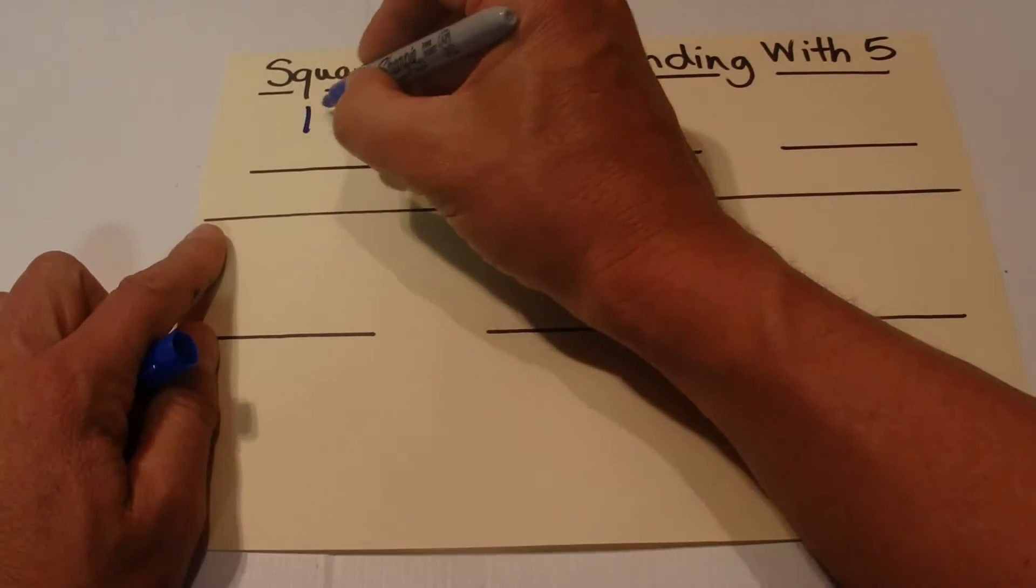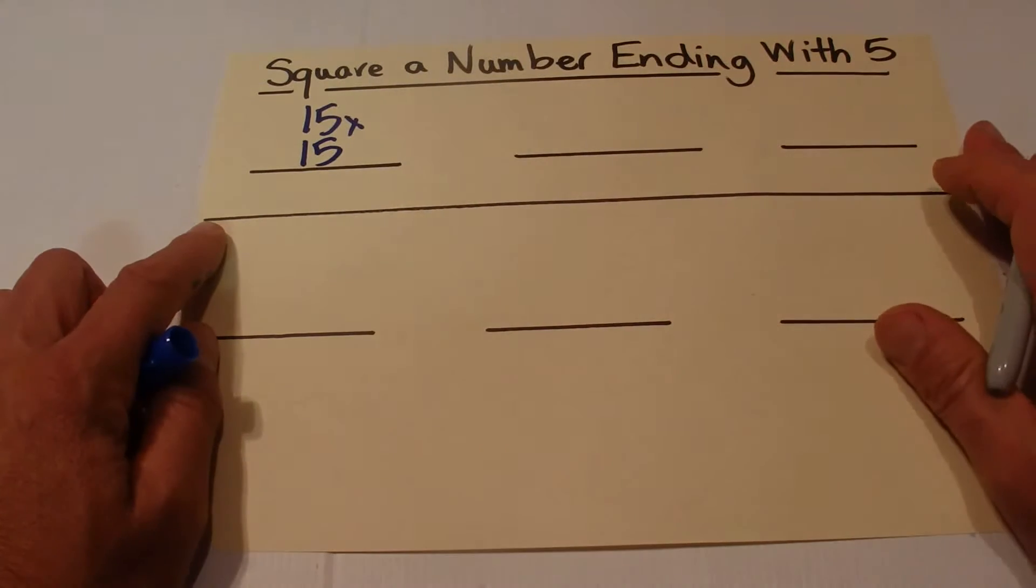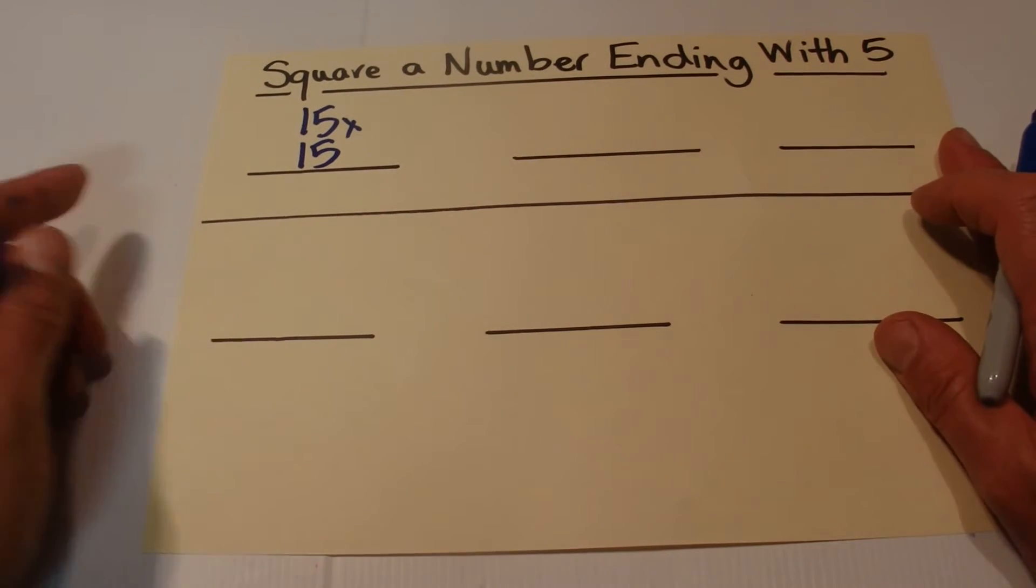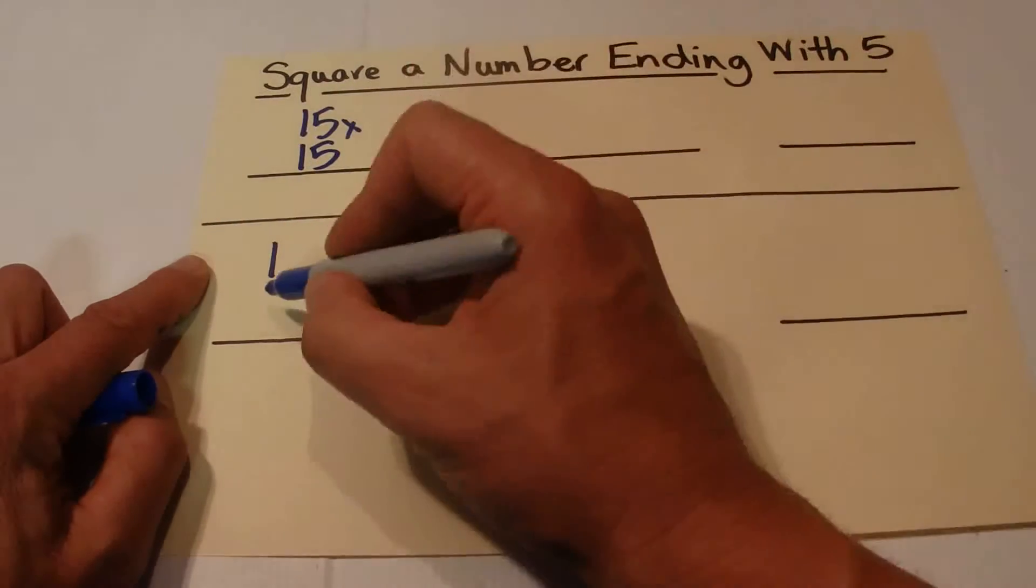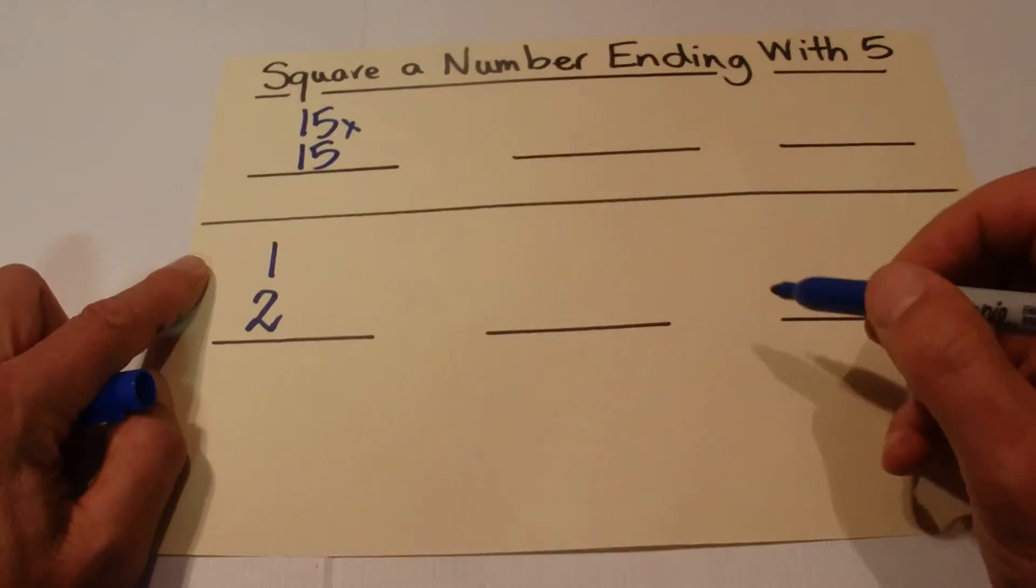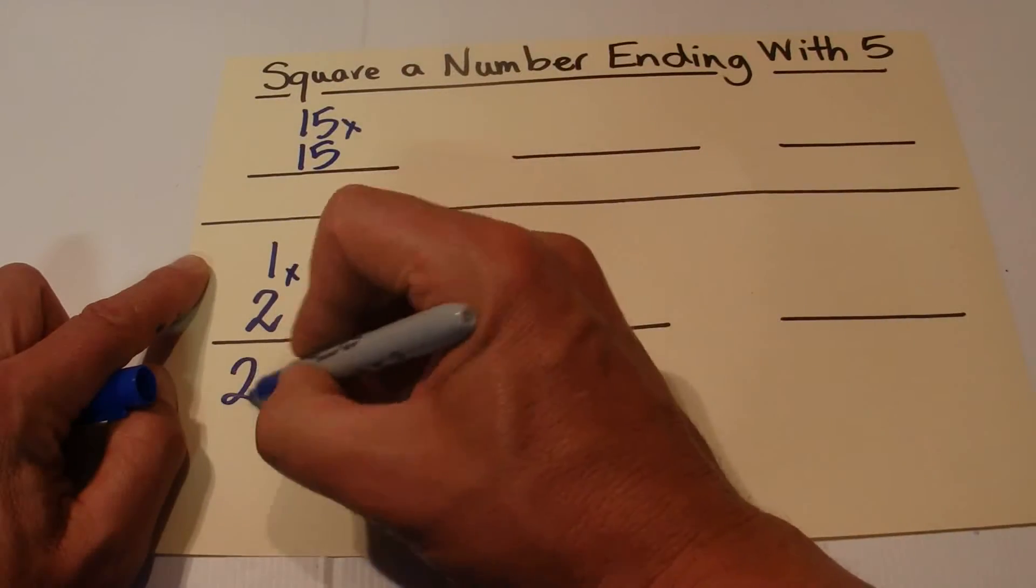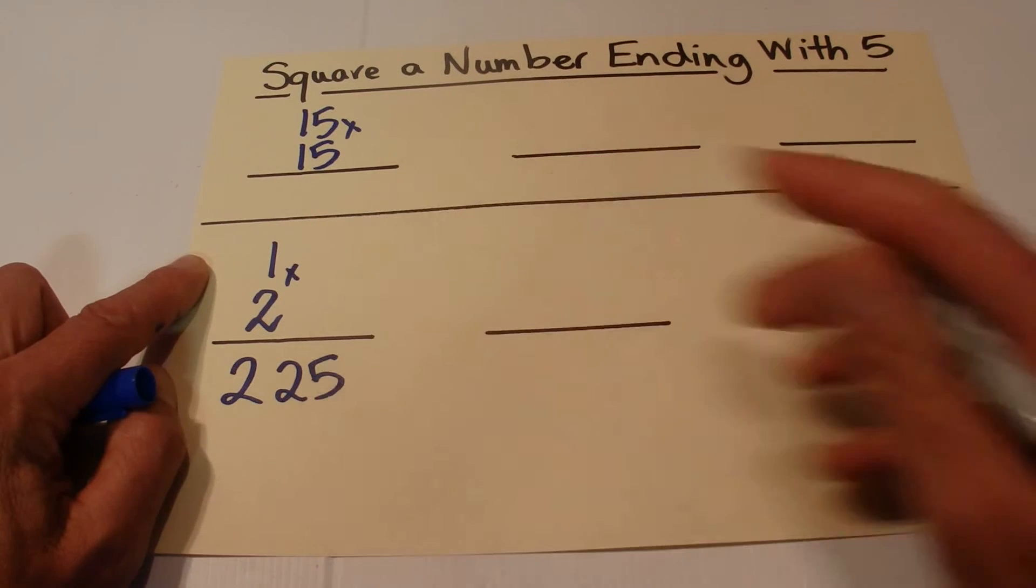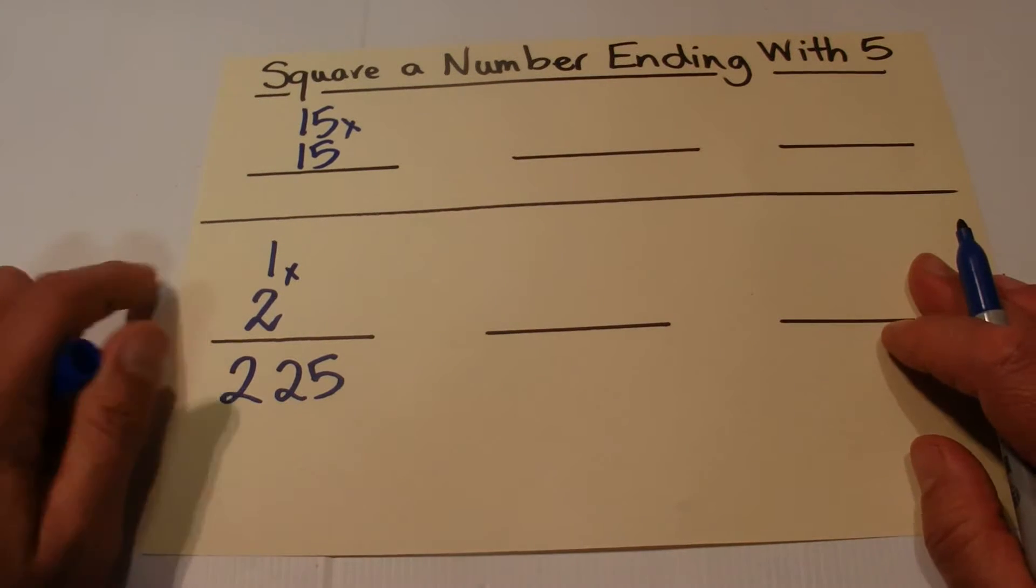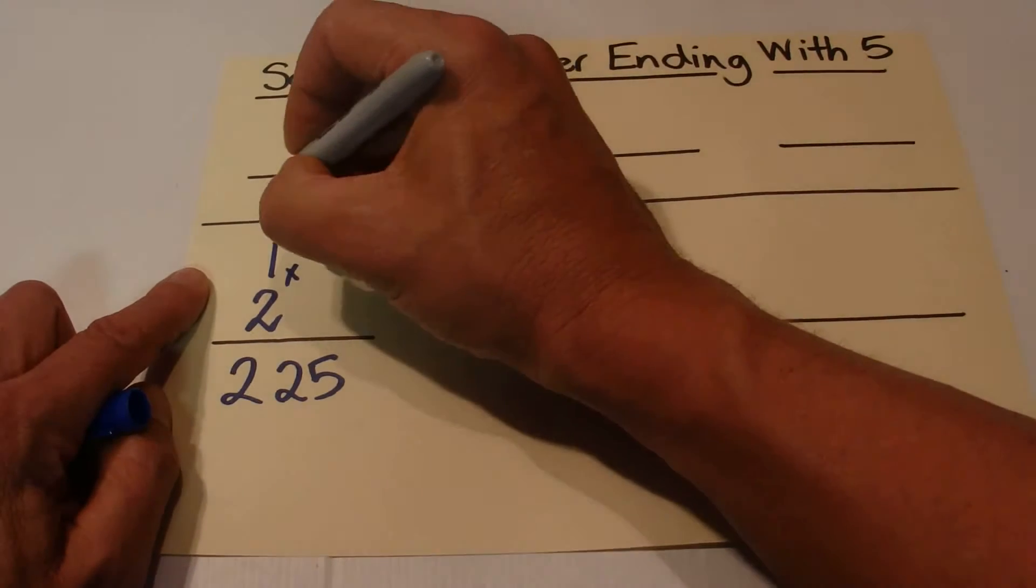I'll just show you how this works. Say for instance you want to square 15, 15 times 15, then you take the 1 from the 15 and increase it by 1 and that gives you 2, and you do 1 times 2 is 2. And then 5 times 5 is 25, and you just add the 25 on the end of the 2, the number that you found there.